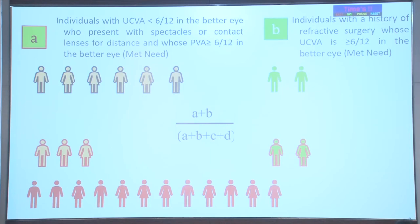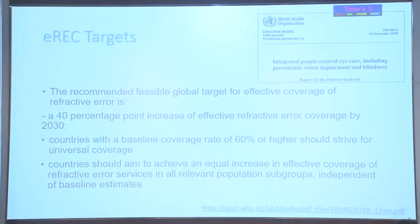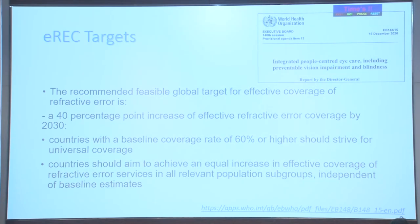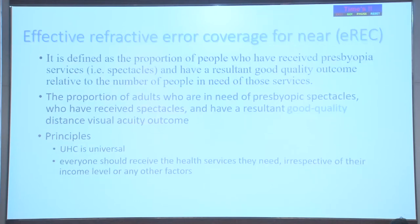The denominator will be those people who are in need of these services. The target, as mentioned by Dr. Praveen, is a 40 percentage point increase of effective refractive error coverage. In our country, though we don't have national data, subnational data from different regions tells that we have around 50–60% coverage in different states. So we can target for 100% coverage by 2030.